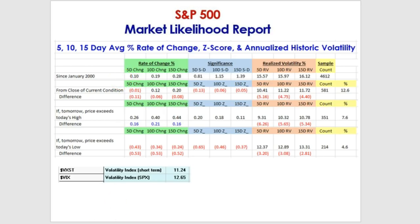We're only looking at this first line. On average, the five-day rate of change from one close to the close five bars later is a tenth of a percent — 0.10%.